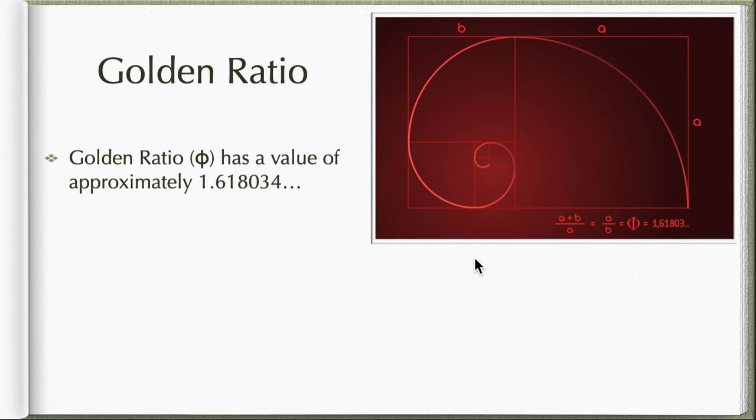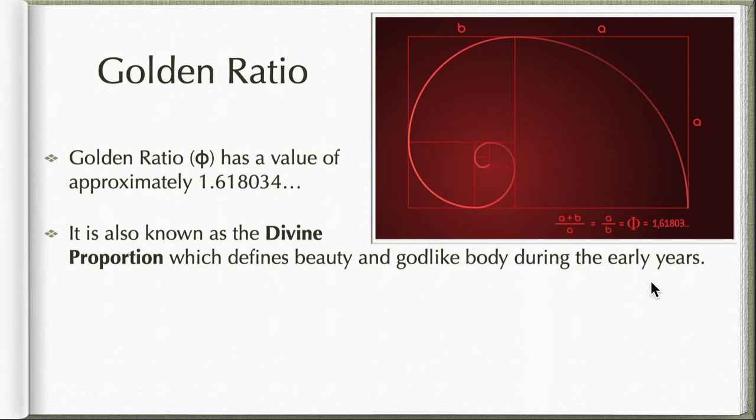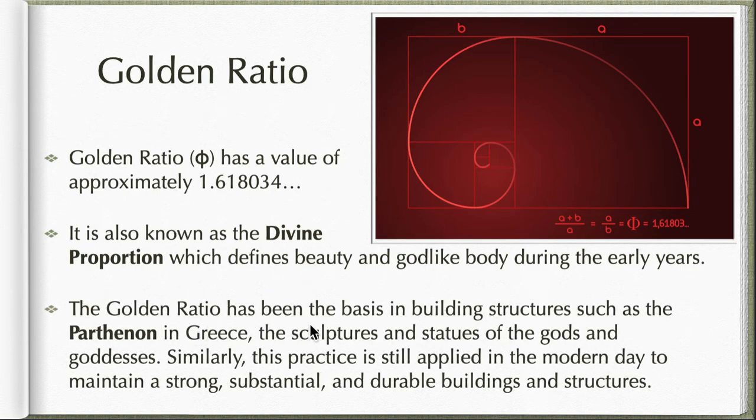It is known also as the divine proportion which defines beauty and god-like body during the early years. Actually, if you have read Dan Brown's book, the Da Vinci Code, this was actually the first time I saw this divine proportion. It defines beauty and god-like body. The golden ratio has been the basis in building structures such as the Parthenon in Greece - I'm going to show you a picture about that in a later video. The sculptures and statues of the gods and goddesses, since they are gods and goddesses they should have this perfect god-like body.